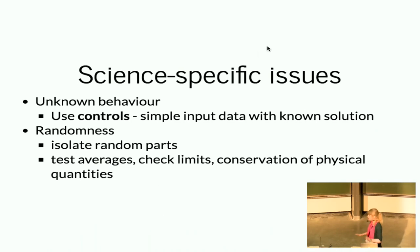Okay, so I mentioned scientific codes are particularly hard to test. So what are some kind of more science-specific issues we might have? So I mentioned we have unknown behaviour. So in experimental science, it's quite common that if you have an apparatus, you'll do tests with controls. So say you've got a detector, you'll check that if you have nothing there, then it won't detect anything. So we can do a similar thing in computational science.